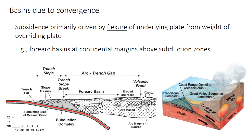There are also a lot of basins formed in convergent plate boundary settings. In this case, the subsidence is primarily caused by flexure, where the underlying plate bends under the weight of the overlying plate or under the weight of mountain ranges formed by continent-continent collision. In subduction zones where ocean crust is going underneath other ocean or primarily continental crust, you get basins called forearc basins. They develop on the seaward side of the volcanic arc above the trench. In California, the Cretaceous sediments of the Great Valley Group were deposited in a forearc basin on the ocean side of the Sierra Nevada arc.